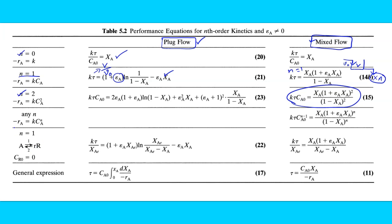For any nth order reaction, the general equation is minus rA = K·CA^N. We have already solved this for a first-order reversible reaction where A gives rise to R. The performance equation based on a plug flow reactor or mixed flow reactor is given accordingly. The general expression for space time τ for a plug flow reactor is: τ = CA0 · ∫₀^XA dXA / (−rA). For a mixed flow reactor: τ / CA0 = XA / (−rA).